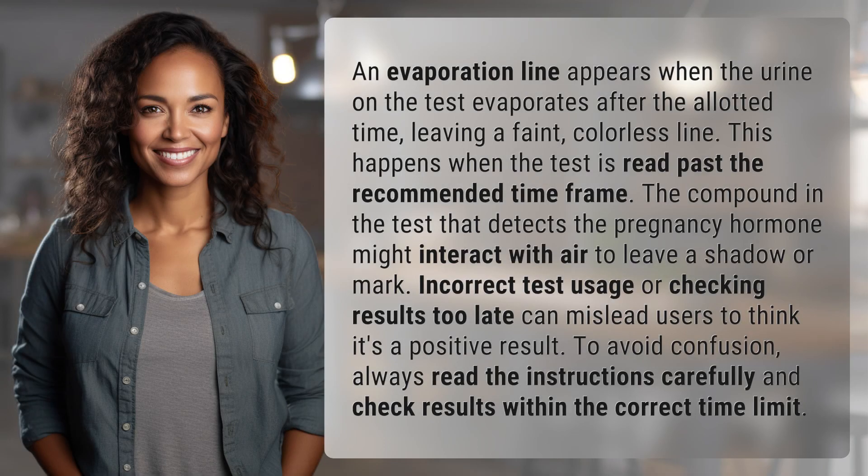An evaporation line appears when the urine on the test evaporates after the allotted time, leaving a faint, colorless line. This happens when the test is read past the recommended time frame. The compound in the test that detects the pregnancy hormone might interact with air to leave a shadow or mark.